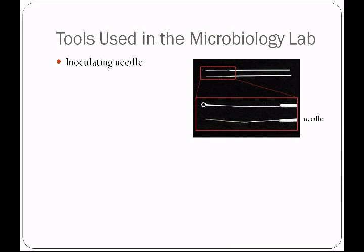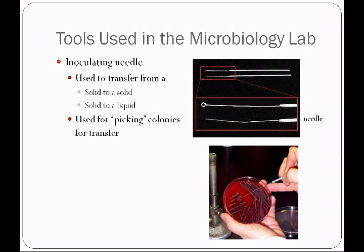Inoculating needles look just like inoculating loops except they don't have a loop at the end — they are straight. They can be sharp so always use caution around them. We use them to transfer from a solid medium to a solid medium; it's very easy to scrape up a colony from a petri dish and transfer it to another medium. We also use a needle to pick a colony — just touch the colony with the needle — and then isolate it to another petri dish or agar medium. Reusable needles are sterilized in a flame just like reusable loops.